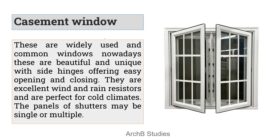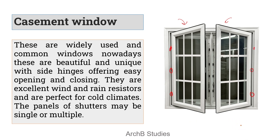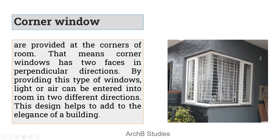Next is the casement window. Casement windows have two panels — it can also be three or four. These panels are attached to the frame with the help of hinges on both sides. These are the most commonly used windows; they are used everywhere. They are excellent wind and rain resistors and are perfect for cold climates.